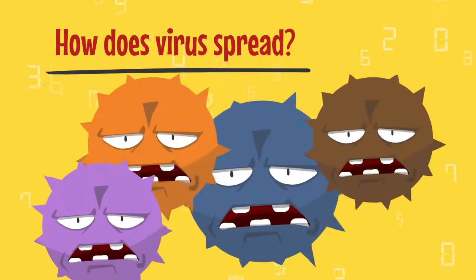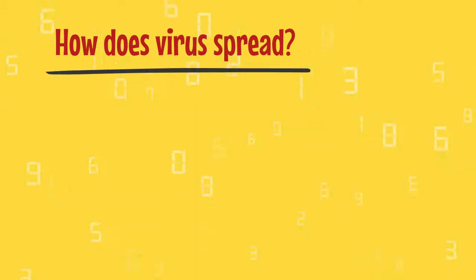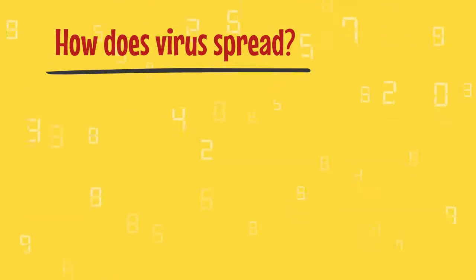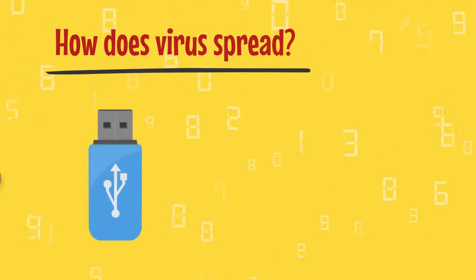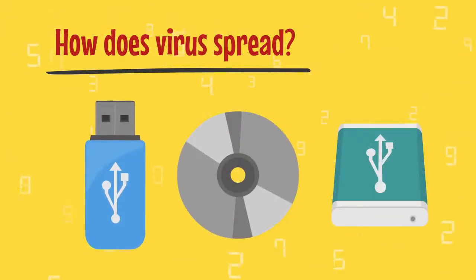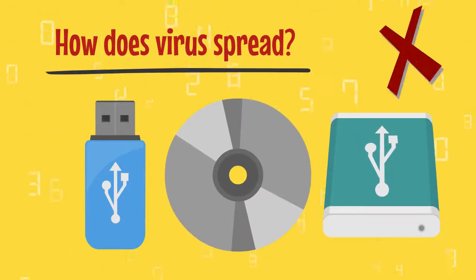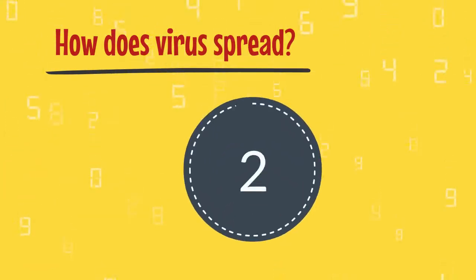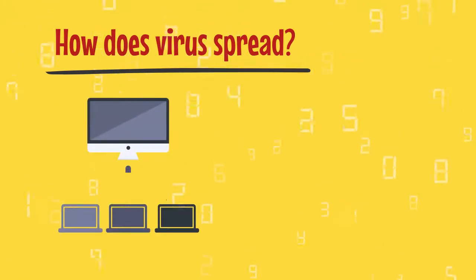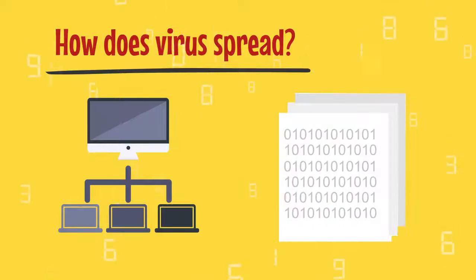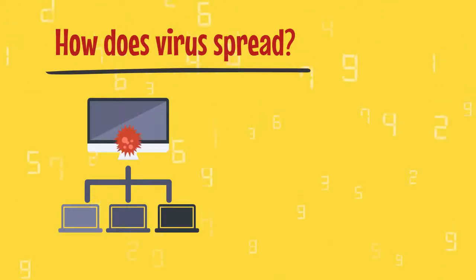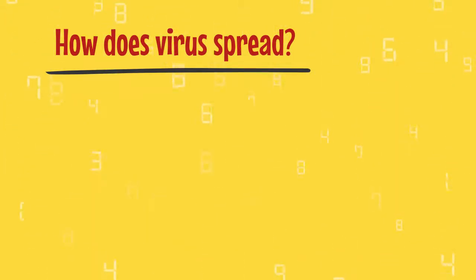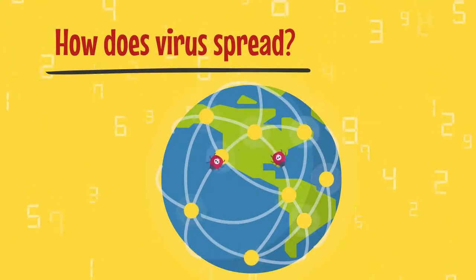Computer viruses can replicate themselves from one program to another very quickly. When an infected program is copied to another computer, it causes infection to that computer. It is advisable to ensure that every portable storage device — for example, pen drives, compact discs, and portable hard disks — plugged into a computer is virus-free, and to avoid unnecessary use of these devices. The second and biggest reason a virus spreads is through networks. When infected data or programs are shared to another computer on the network, that computer also gets infected. The internet, being a network of networks, is also a major source of spreading viruses.